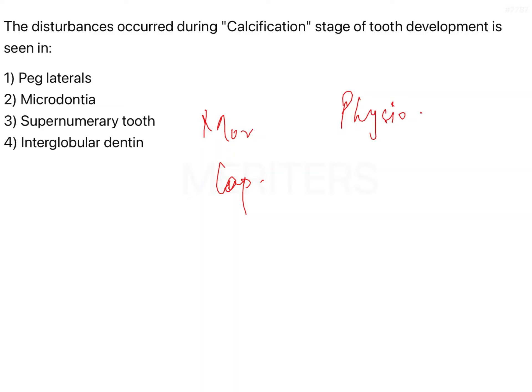In these physiological stages, the different stages of tooth development are differentiated into 5 or 6 stages based on the physiological role of the cells present. When the cells differentiate in those tissues, that is called histodifferentiation. When the cells of the oral epithelium start dividing to form the dental lamina, that is called morphodifferentiation. Towards the end, you have the calcification stage or the apposition stage.